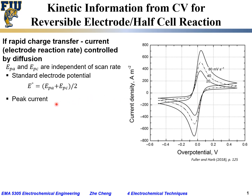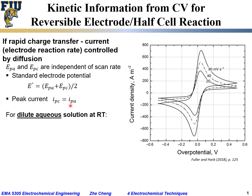The peak current — we have positive anodic and negative cathodic. Under ideal conditions, the magnitude of the anodic and cathodic peak currents should be the same.